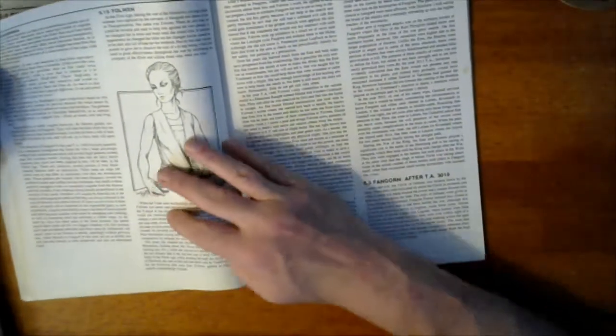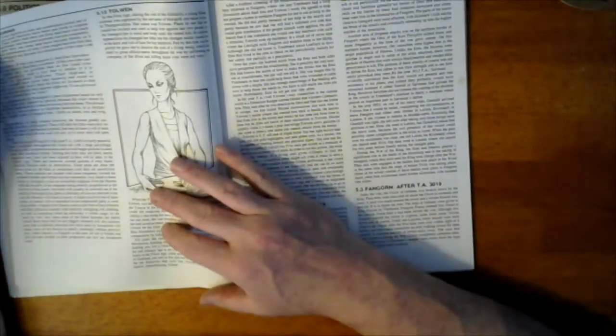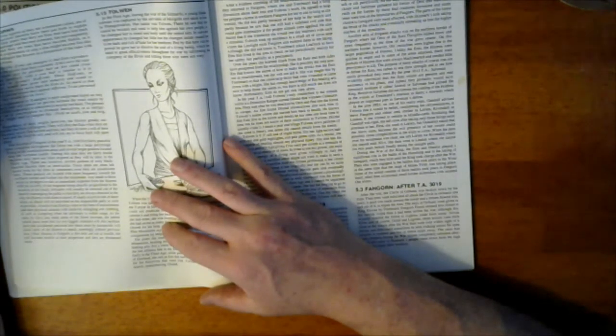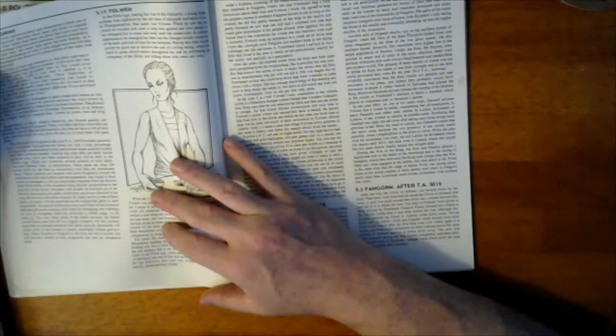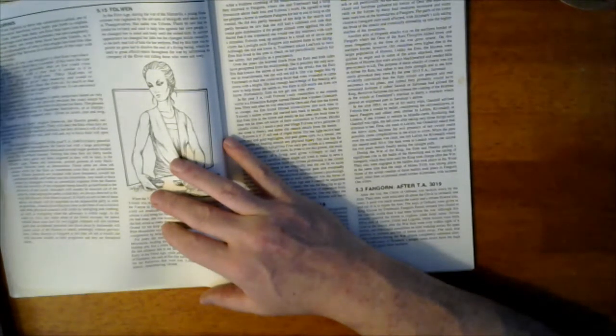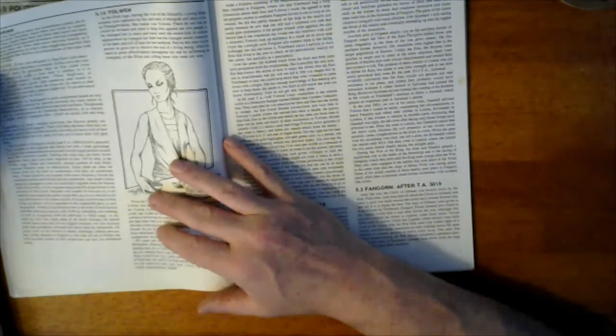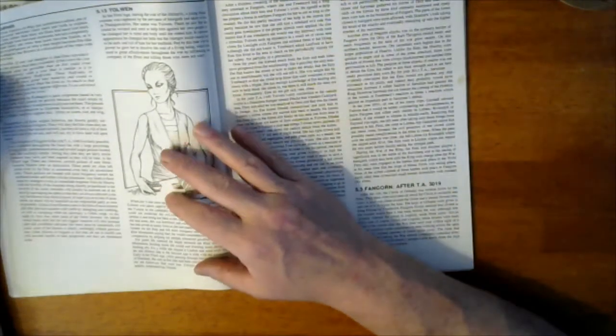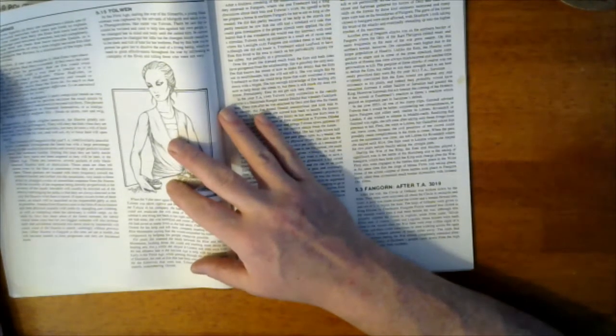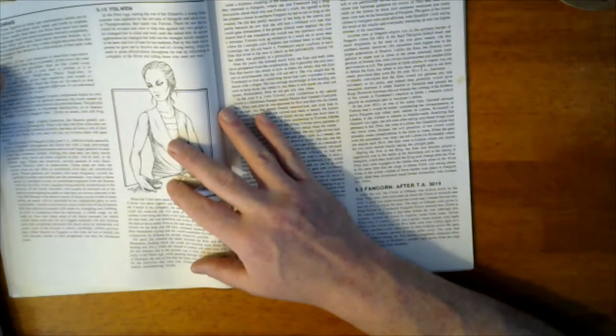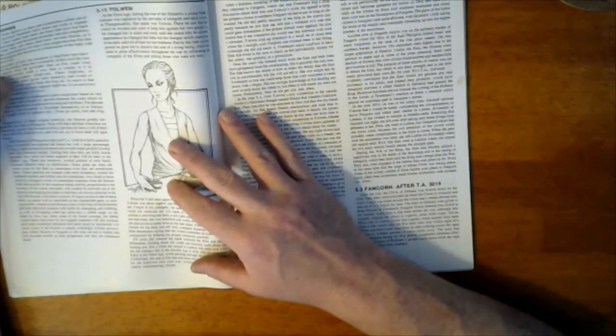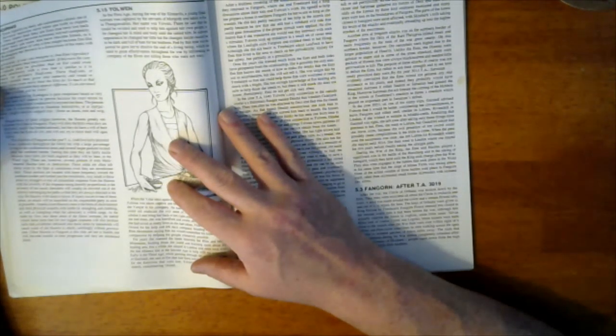The Huorns are tree spirits as they're sometimes called, of unknown origin. Several theories are put forth to explain their beginnings. One states that they are Ents who've lost track of their cultural heritage and become dormant but not completely. Others state they are trees that become Entish. That's my personal view. I believe that being around the Ents and the Ent magic for eons or millennia have caused certain trees to kind of wake up.